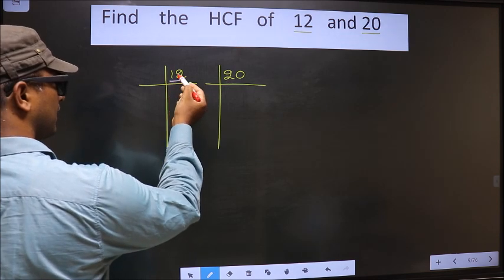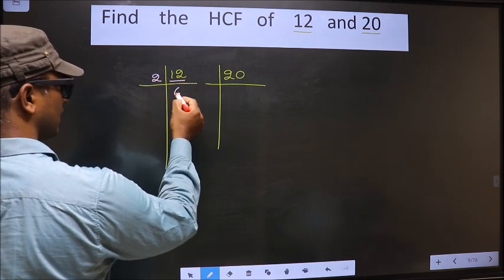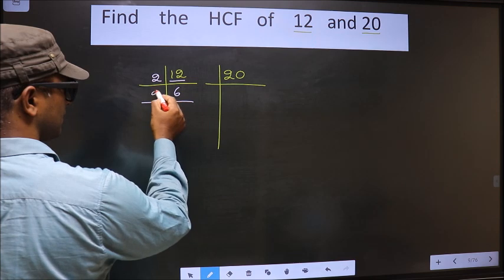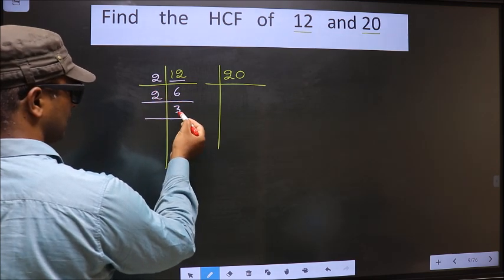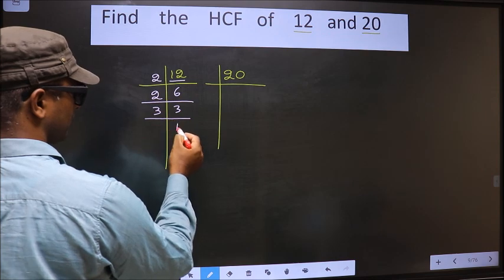Here we have 12. 12 is 2, 6. Now 6 is 2, 3. Now we have 3. 3 is the prime number. So 3, 1, 3.